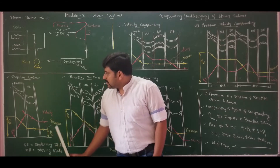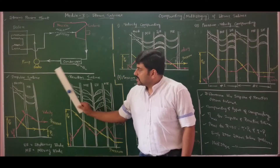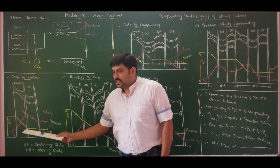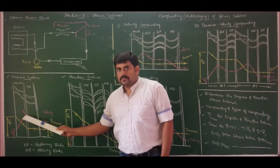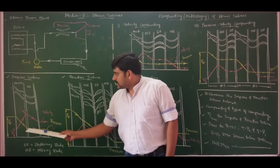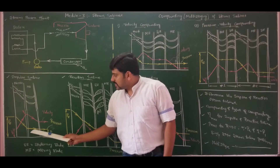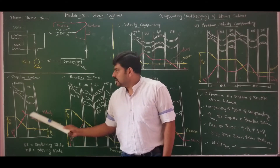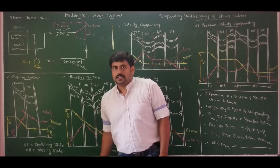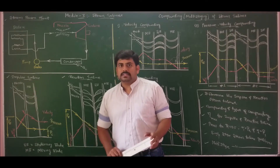For an impulse turbine, observing the variation of pressure and velocity over the steam passage length: in the nozzle, pressure drop is observed and velocity increases. In the moving blades, velocity decreases whereas pressure remains constant. Since pressure is constant, there is no change in enthalpy in the moving blade — the change in enthalpy occurs only in the nozzle. That is, steam expands completely in the nozzle for the impulse turbine.